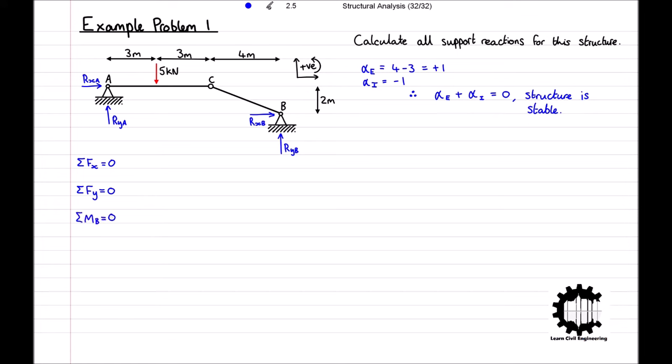So let's apply these equations to our structure. Taking the x coordinate direction to be positive, the sum of all horizontal forces is equal to rxa plus rxb equals zero. Taking the y coordinate direction to be positive, the sum of all vertical forces is equal to rya plus ryb minus five equals zero. Taking anti-clockwise rotation to be positive, the sum of all moments relative to point B is equal to minus rya times ten minus rxa times two plus five times three equals zero. And finally, the sum of all moments applied to the structure on the left side of the hinge is equal to minus rya times six plus five times three equals zero.